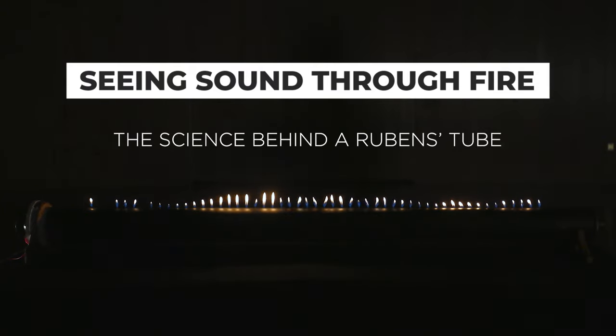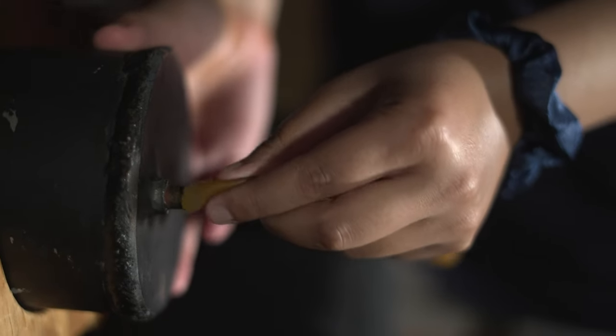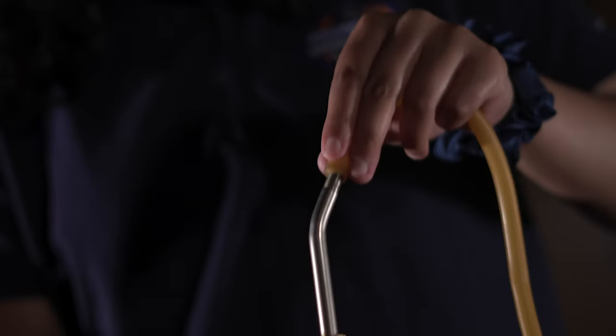A Rubens tube is a long narrow metal tube that consists of holes that are drilled along its length. Both sides of the tube are sealed, but there is an attachment on one of the sides where you can add a gas source like propane.